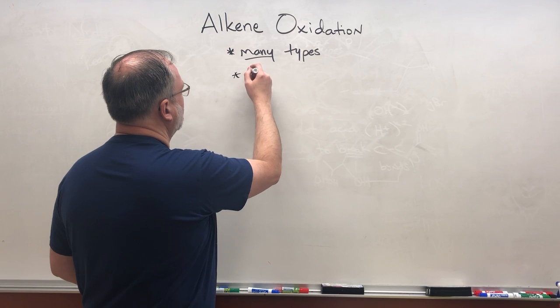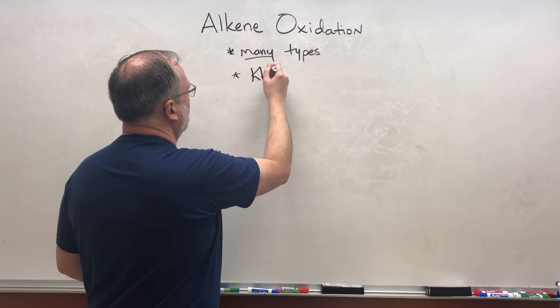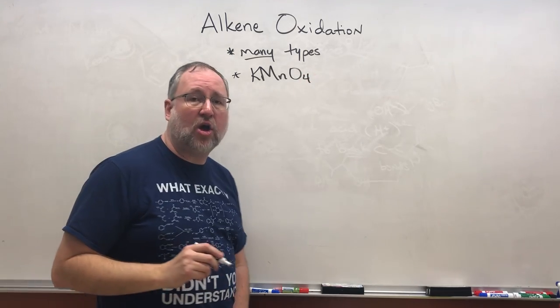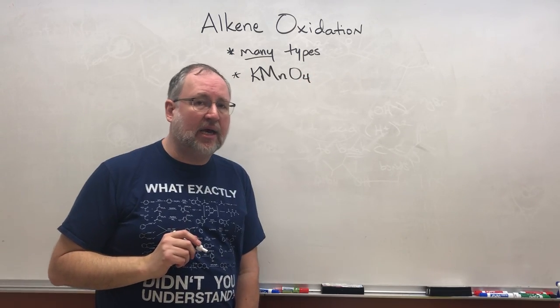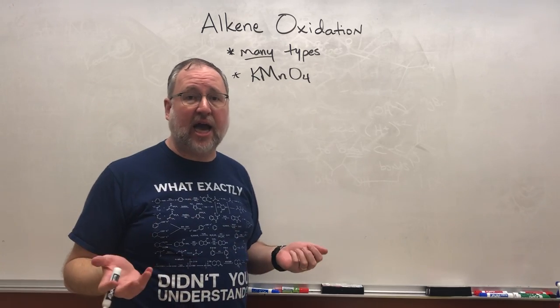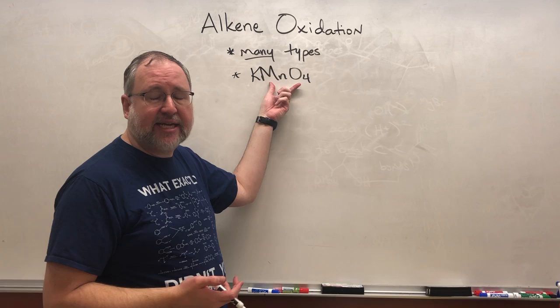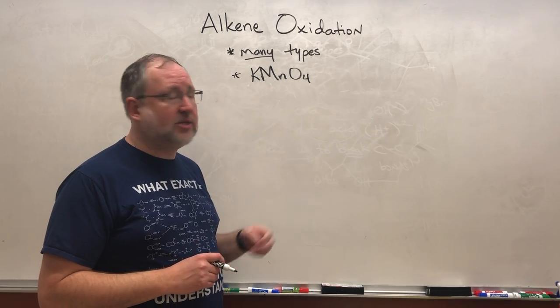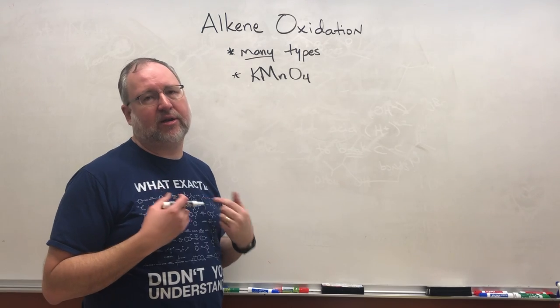So we're gonna be using a compound called potassium permanganate. The potassium ion is just a spectator, this is an ionic compound. The oxidizing part is the permanganate ion, MnO4 with a charge of minus one. So this is the only one that we're going to talk about in our class.